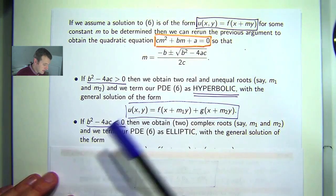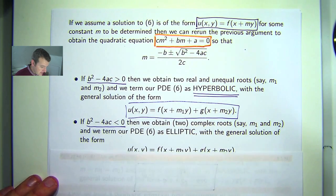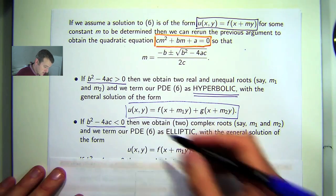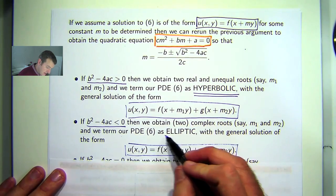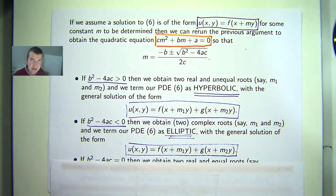If the discriminant is negative, then we obtain two complex roots. And this is our form. And again, our PDE is known as an elliptic PDE.